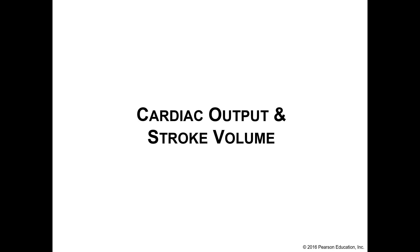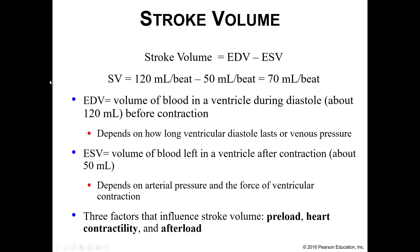In this lecture we're going to discuss cardiac output and stroke volume. Stroke volume can be measured by subtracting your end systolic volume from your end diastolic volume. Your end diastolic volume should be approximately 120 milliliters with every beat, and your end systolic should be approximately 50 milliliters per beat. This would give you a stroke volume of approximately 70 milliliters per beat.